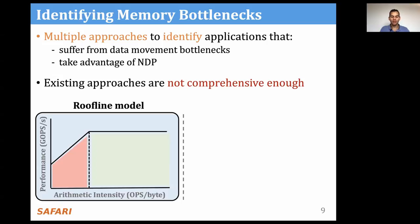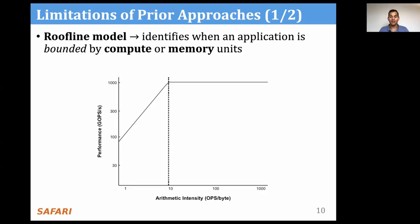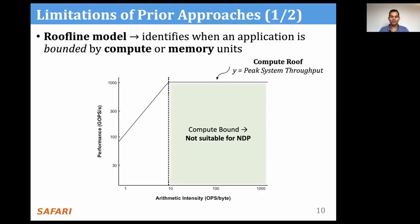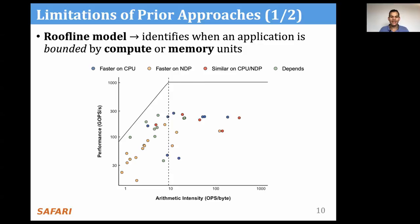The first one is the so-called roofline model, which correlates the arithmetic intensity of an application with the performance of the application. The second one is using high last-level cache misses per kilo instructions as an indication of NDP suitability. The roofline model is a simple model to identify when an application is compute-bound or memory-bound. It defines on the x-axis the arithmetic intensity of the application in operations per byte, and on the y-axis the performance in giga-operations per second. Applications below the compute-roof are called compute-bound, and prior works have shown that compute-bound applications are not suitable for NDP offloading. Applications below the memory-roof are called memory-bound and they are not suitable for NDP offloading.